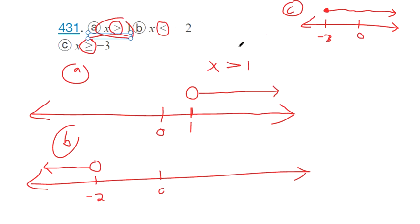Okay, so hopefully that helps. Think about the alligator. If the alligator is eating x, that means x is bigger than negative 3. So you've got to point to all the numbers that are bigger than negative 3.